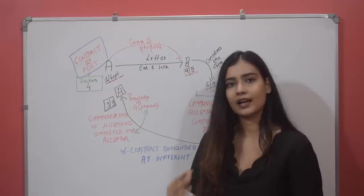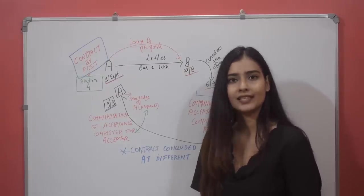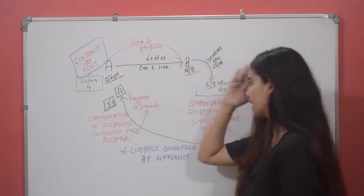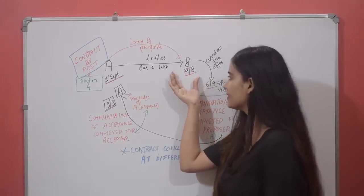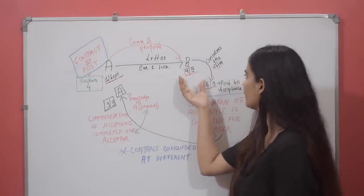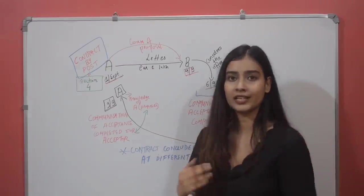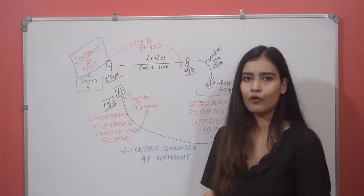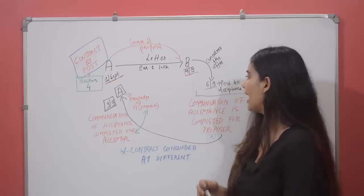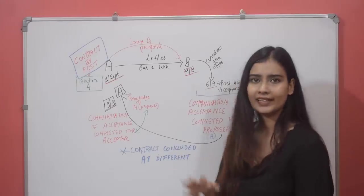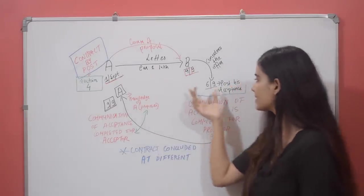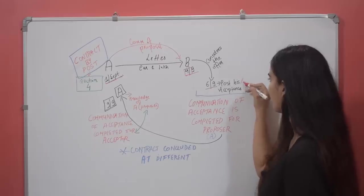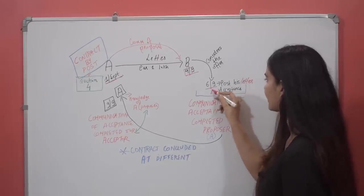The difficulty comes in the second paragraph. Now we will see when the communication of acceptance is complete. Taking ahead this example — B received the letter on 4th. He considered the offer for two days, thinking whether he should go for this offer or not. He finally decided that he will take the car of A. On 6th September, he posted his letter of acceptance.